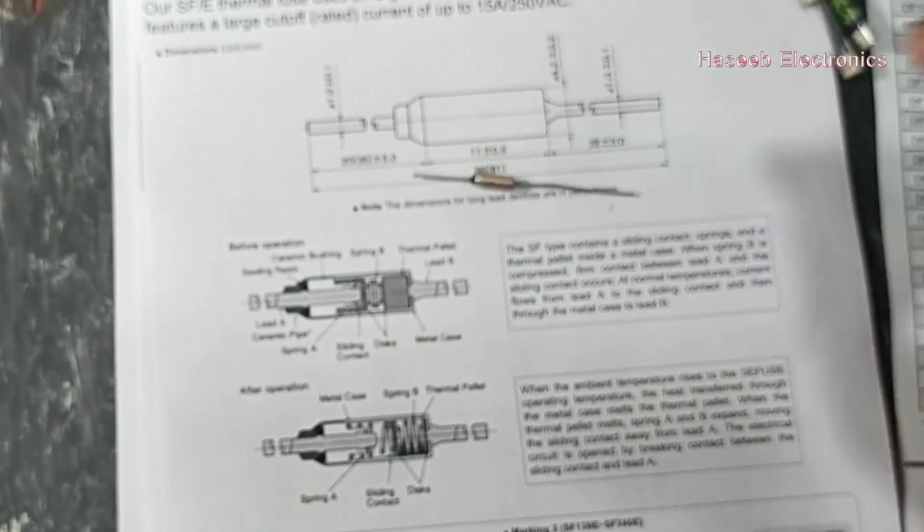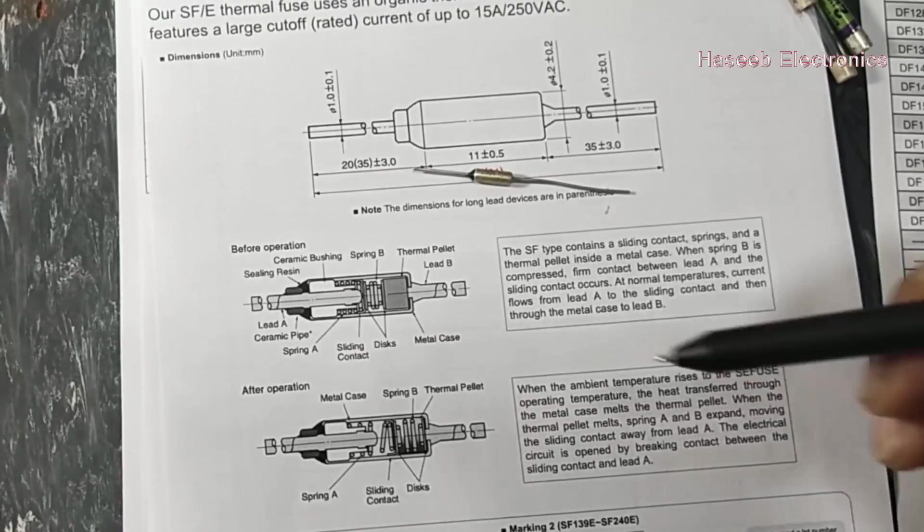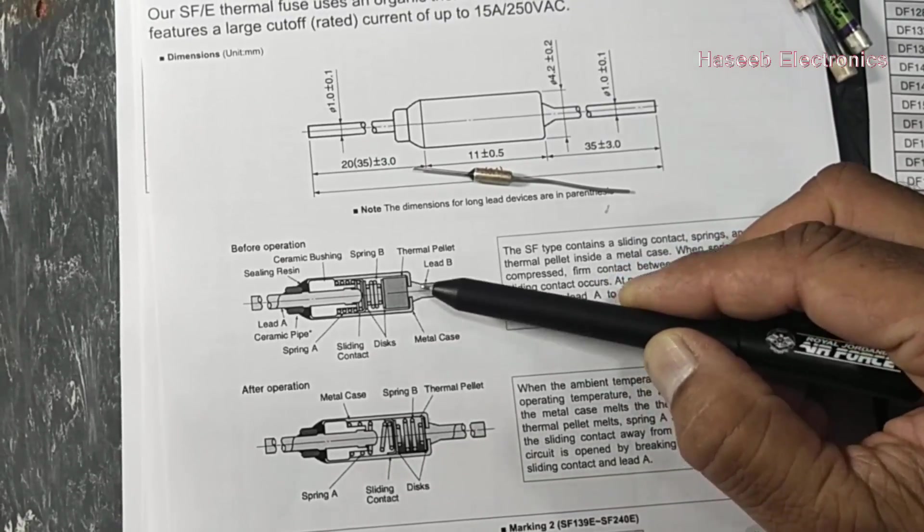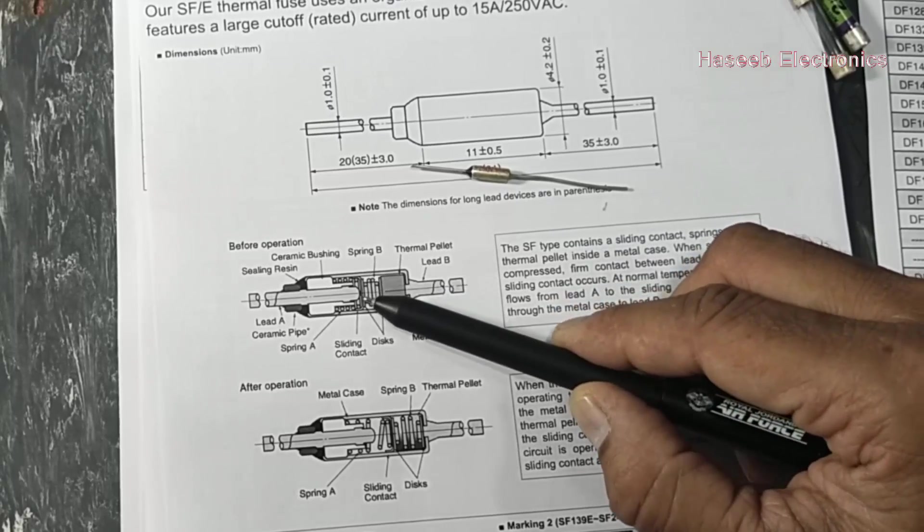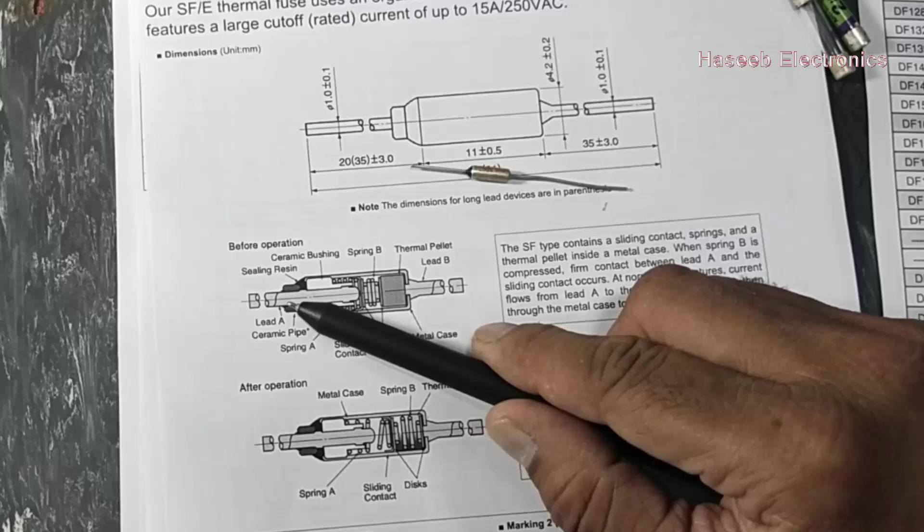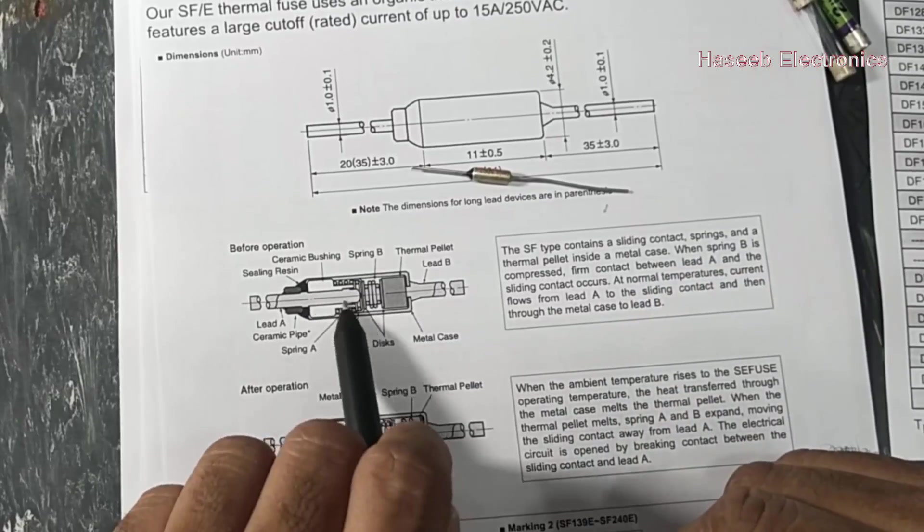It has a thermal pellet inside, then it has disks, then there is a spring, and then it has a contact which is connected to the other side.